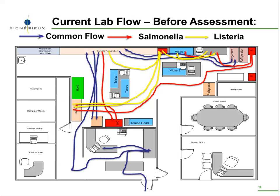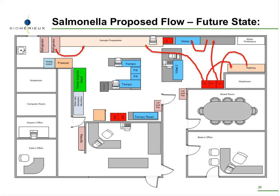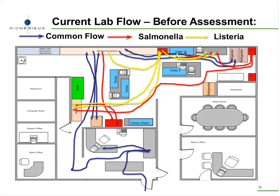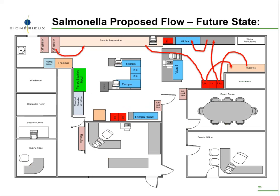Once all this motion was identified, a future state spaghetti was built. Going back to the previous slide, you can see a lot of motion happening — the blue, yellow, and other colored lines differentiate the different types of samples that were being tested and moved around the lab. And this is the future state — see how much motion is reduced. Just by moving simple things around and creating that cellular layout, we were able to reduce a lot of noise.